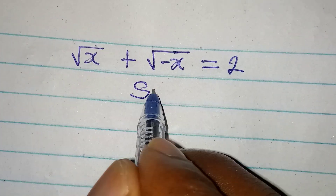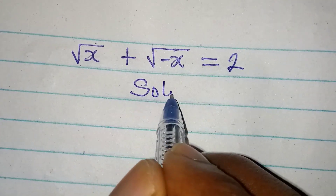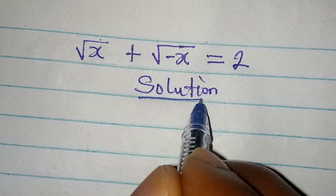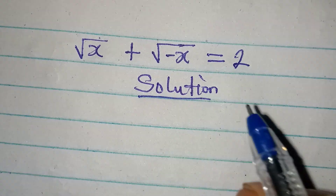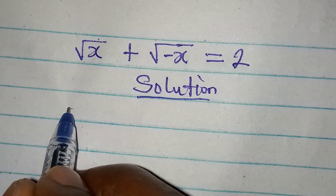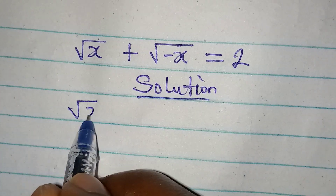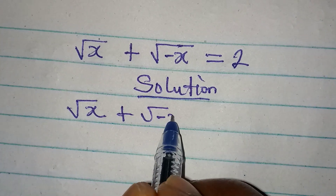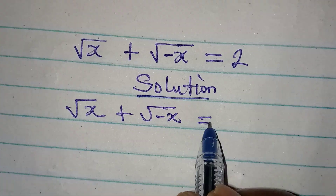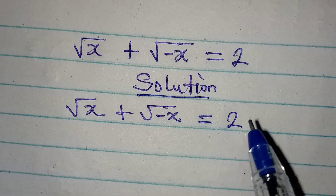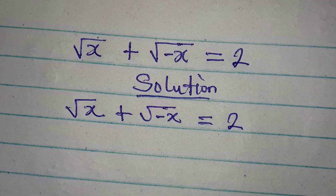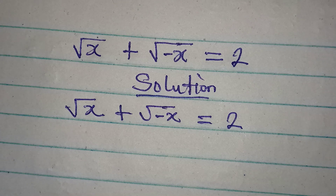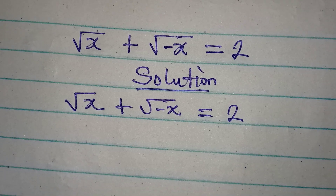Hello everyone, let's provide the solution to this problem very quickly. We have square root of x plus square root of negative x equal to 2. The question is: do you think this will give us a real solution?